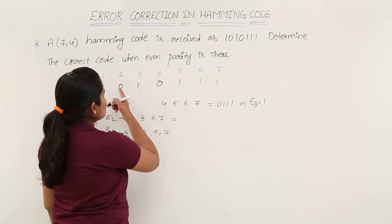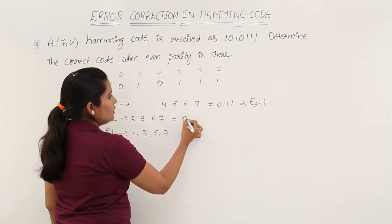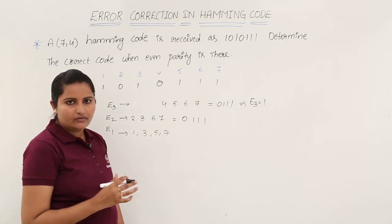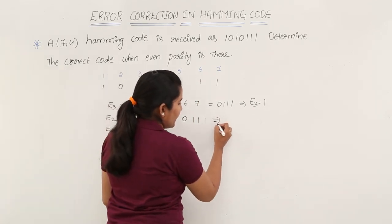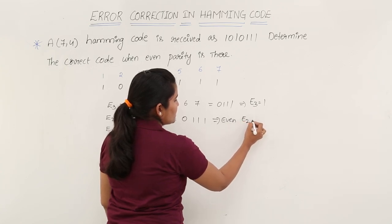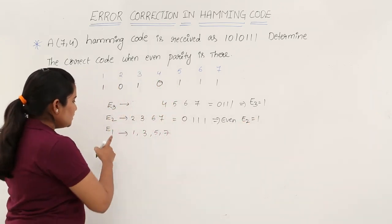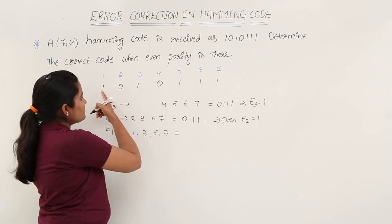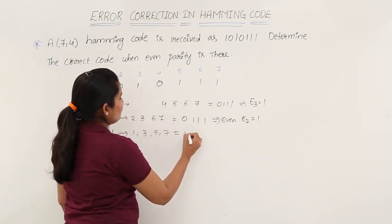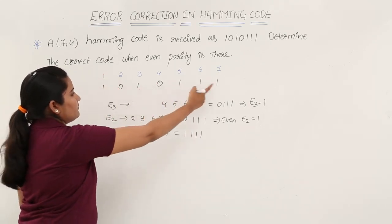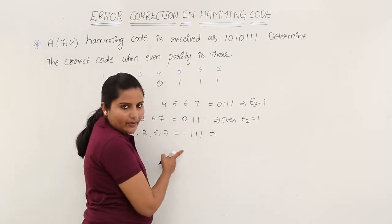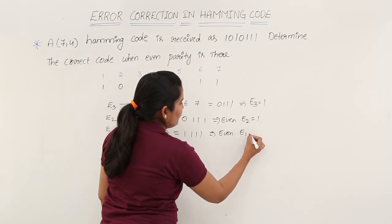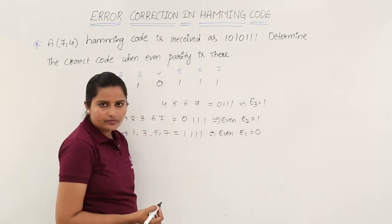Checking positions 2, 3, 6, 7: the bits are 0, 1, 1, 1 — again three 1s, which is an odd number. To make it even, E2 must be equal to 1. Now for E1, check positions 1, 3, 5, 7: the bits are 1, 1, 1, 1 — four 1s. Since this is already even parity, E1 is equal to 0.